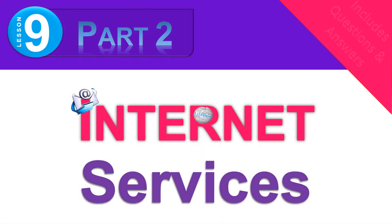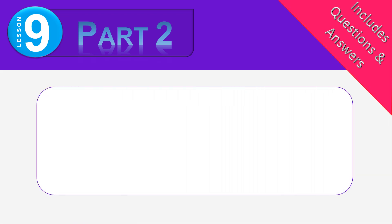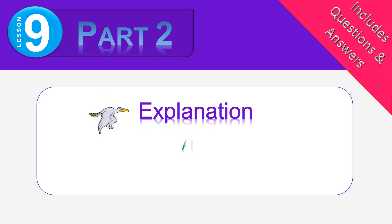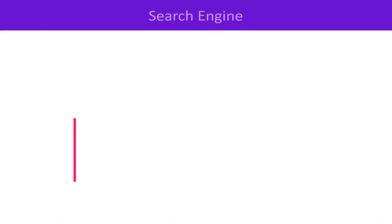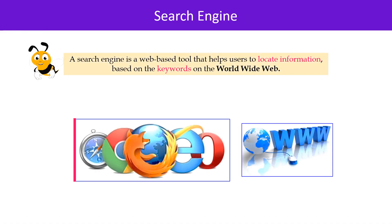Lesson 9: Internet Services, Part 2. This session includes explanation and then an exercise at the end. Let's begin our discussion with search engines. A search engine is a web-based tool, meaning a software that runs on a web browser, that helps users locate information based on keywords. Keywords are the words or phrases that we type into the search engine, such as Google, to find what we are looking for on the World Wide Web.